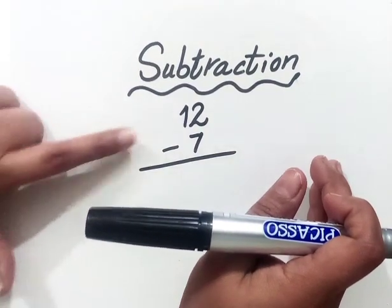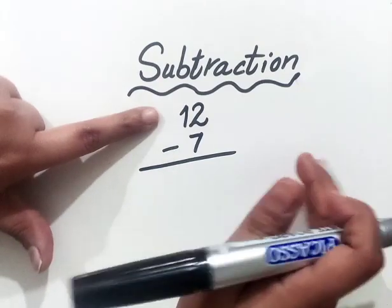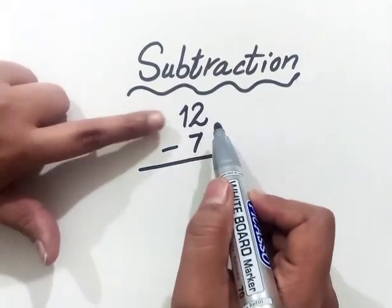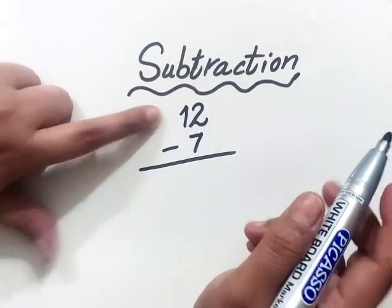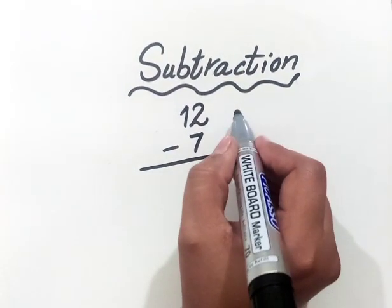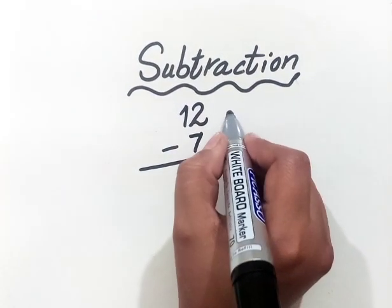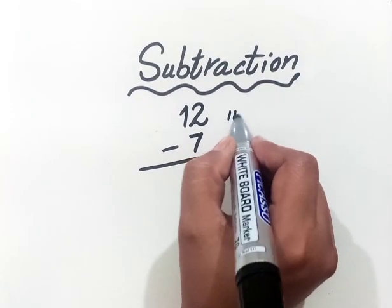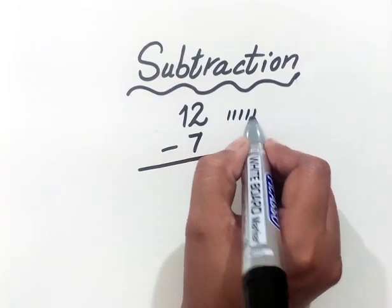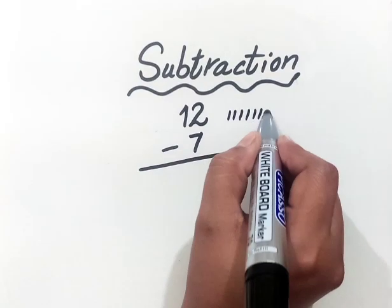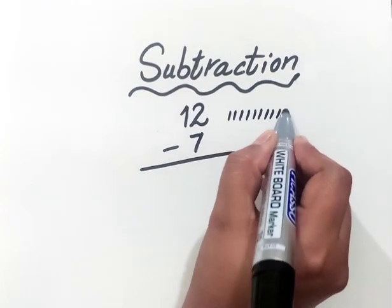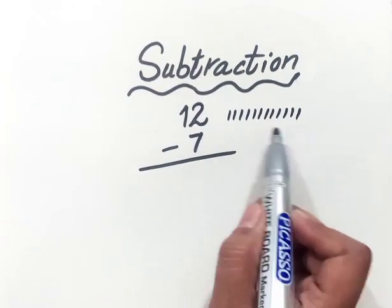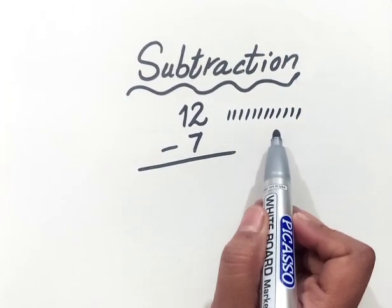First of all, you have to see the first value. What is the first value? 12. I'll draw 12 single lines here: 1, 2, 3, 4, 5, 6, 7, 8, 9, 10, 11, 12. Alright, these are 12 lines.